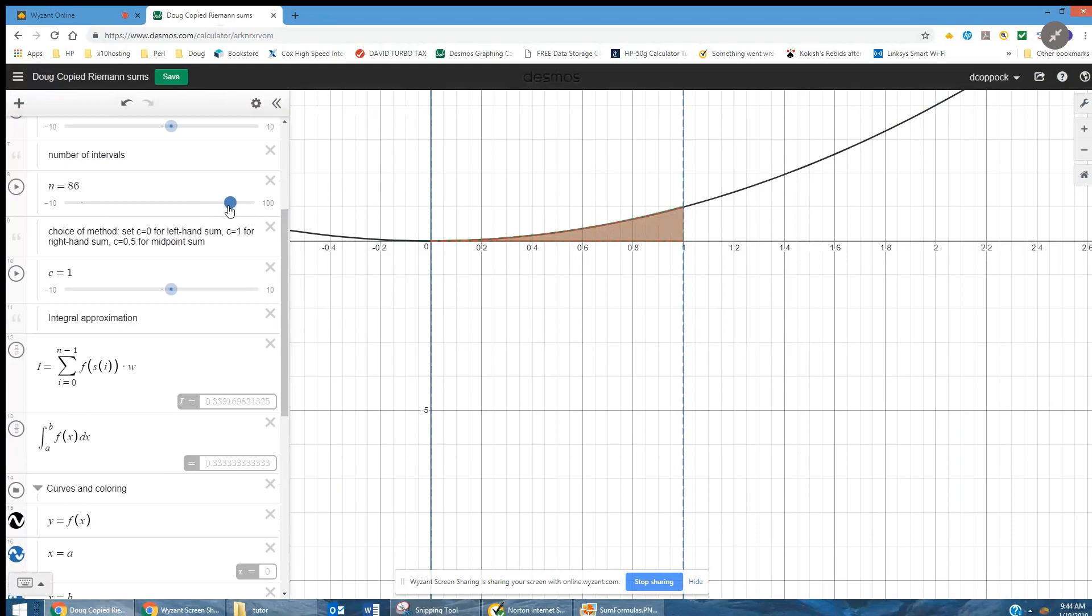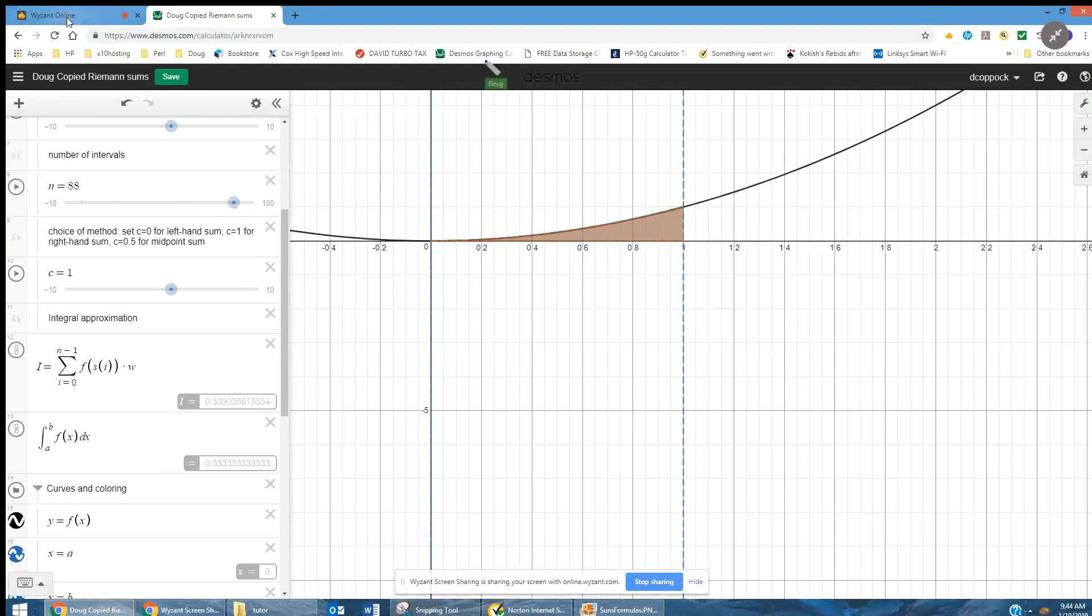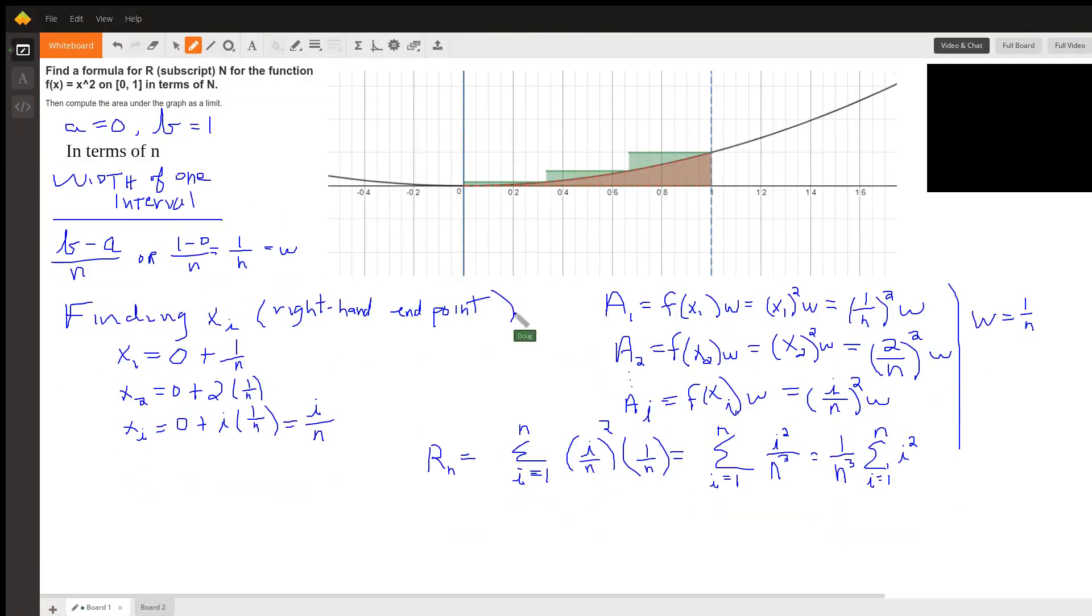The idea is for us to divide the interval from zero to one into n rectangles, and then come up with the summation notation to represent the area or the sum of the areas of all those rectangles, and then let the number of rectangles approach infinity.